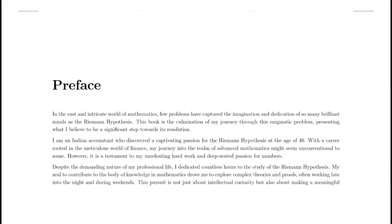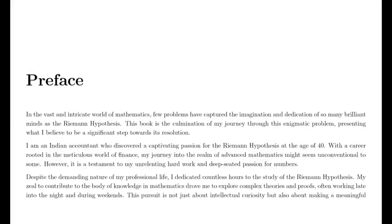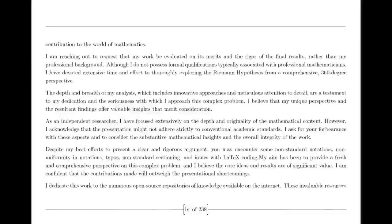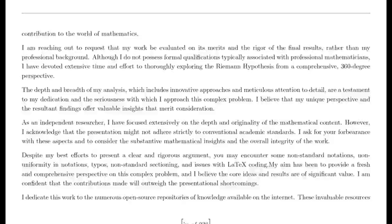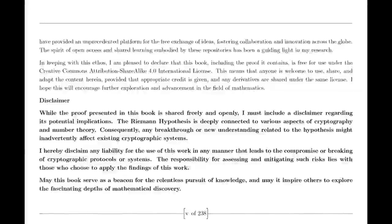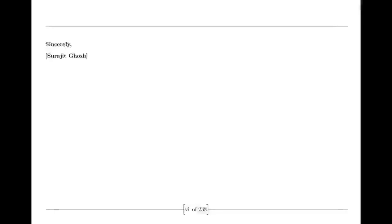Euler's Initial Work. We begin with the remarkable contributions of Leonard Euler. In the 18th century, Euler made groundbreaking discoveries in understanding infinite series. He introduced the idea that the harmonic series — the sum of the reciprocals of the positive integers — could be expressed as a product over prime numbers. This was a revolutionary insight linking the harmonic series to the profound properties of prime numbers. Euler's formula was one of the first indications of the deep connections between primes and series.